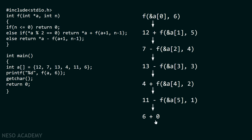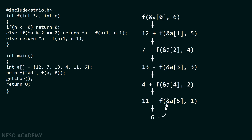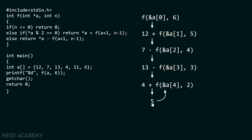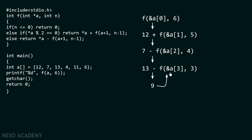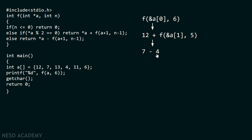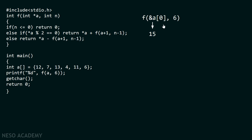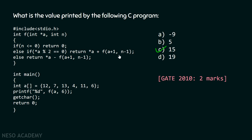Now the return procedure starts: 6 plus 0 gives us 6, which is returned back to the caller F(&A[5], 1). That function is replaced by 6, and 11 minus 6 is 5, which is returned back. 5 replaces F(&A[4], 2), and 5 plus 4 is 9, so 9 is returned. Then 13 minus 9 is 4, which is returned. Then 7 minus 4 is 3, which is returned. Finally, 12 plus 3 is 15. This value 15 is returned back to the caller, so the final value obtained from the whole procedure is 15, which gets printed on the screen. The output of this program is 15, and hence option C is the correct answer.